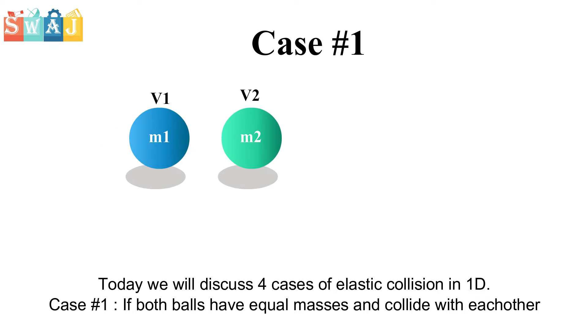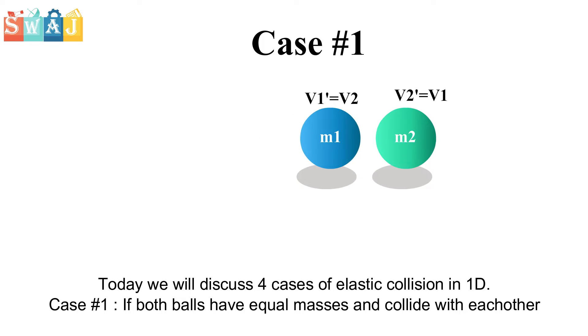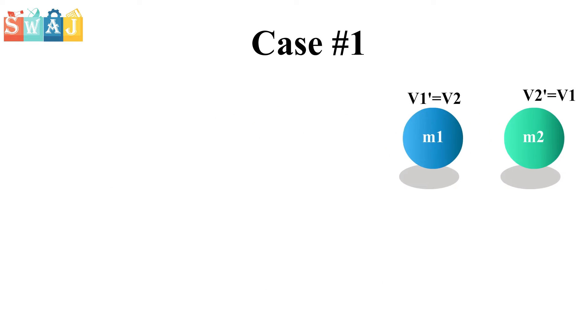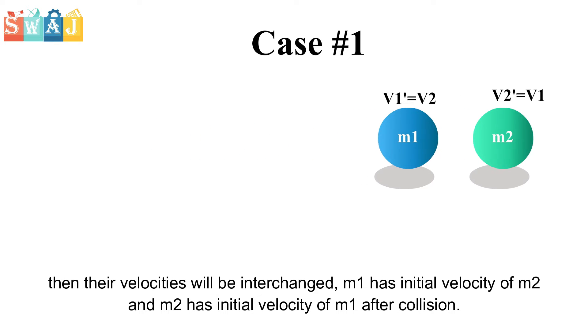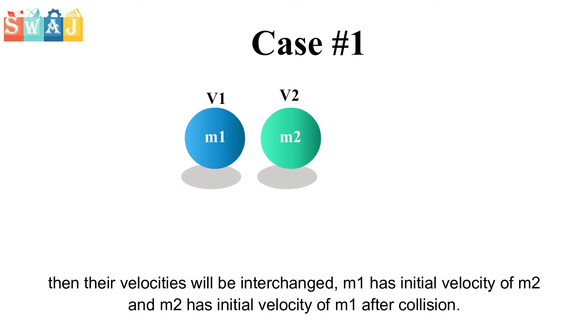Case 1: If both balls have equal masses and collide with each other, then their velocities will be interchanged. Mass M1 has the initial velocity of M2, and M2 has the initial velocity of M1 after collision.